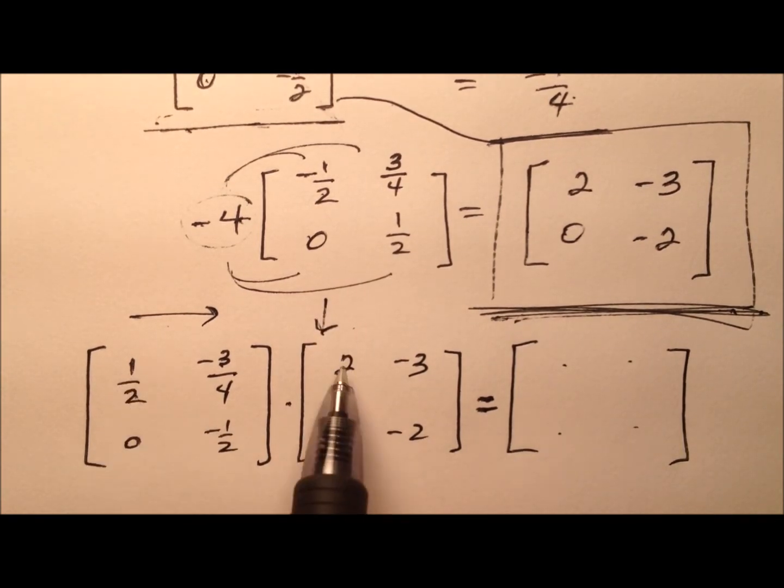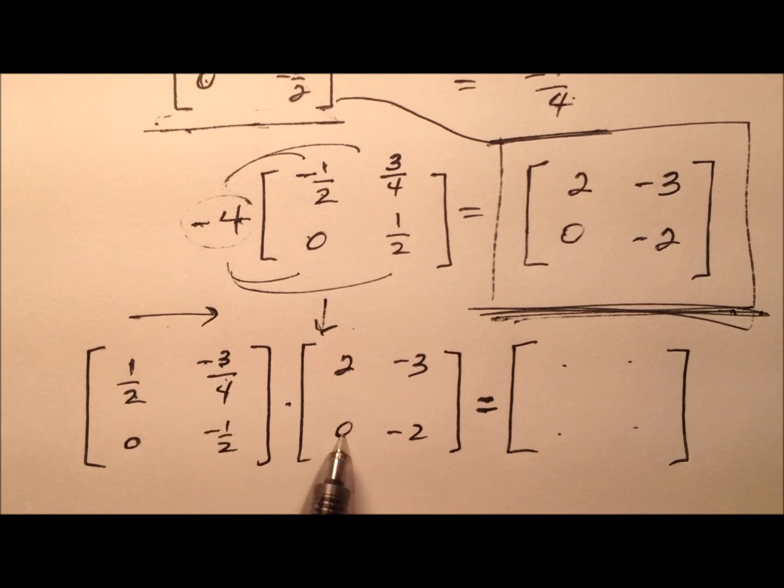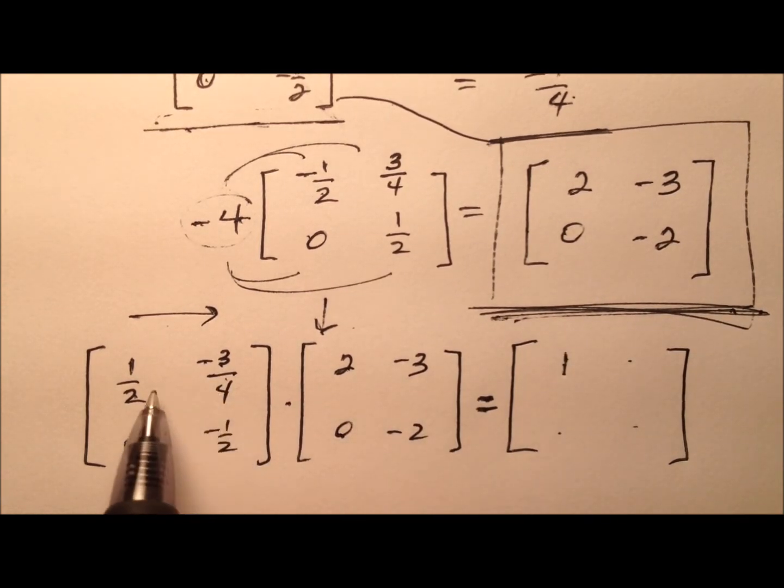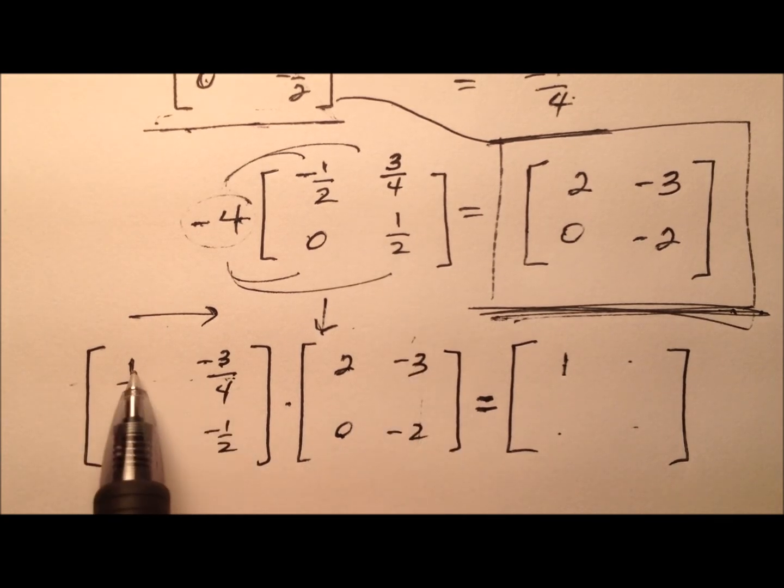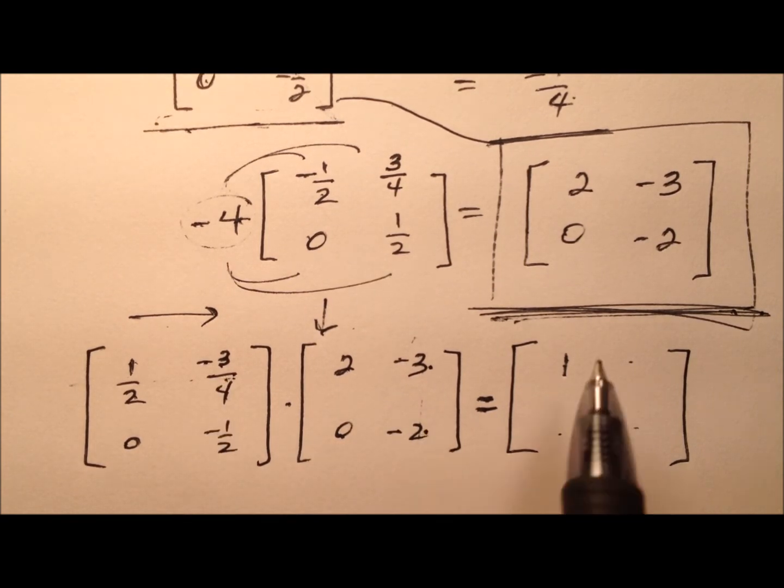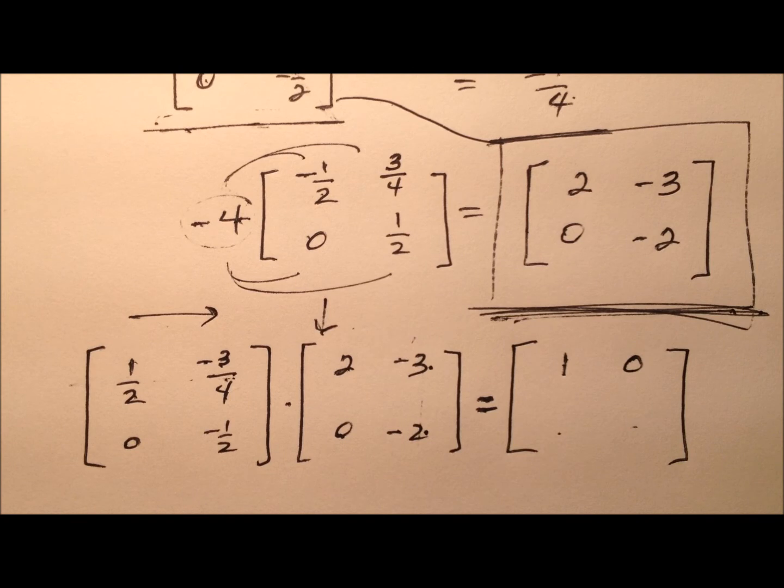When we multiply, we're going to come across the rows and down the columns. So 1/2 times 2 is 1, and then negative 3/4 times 0 is 0. So 1 plus 0 is 1. First row, second column. So 1/2 times negative 3 is negative 3/2, and then negative 3/4 times negative 2 is positive 3/2. So that negative 3/2 and positive 3/2 cancel each other out. So 0.